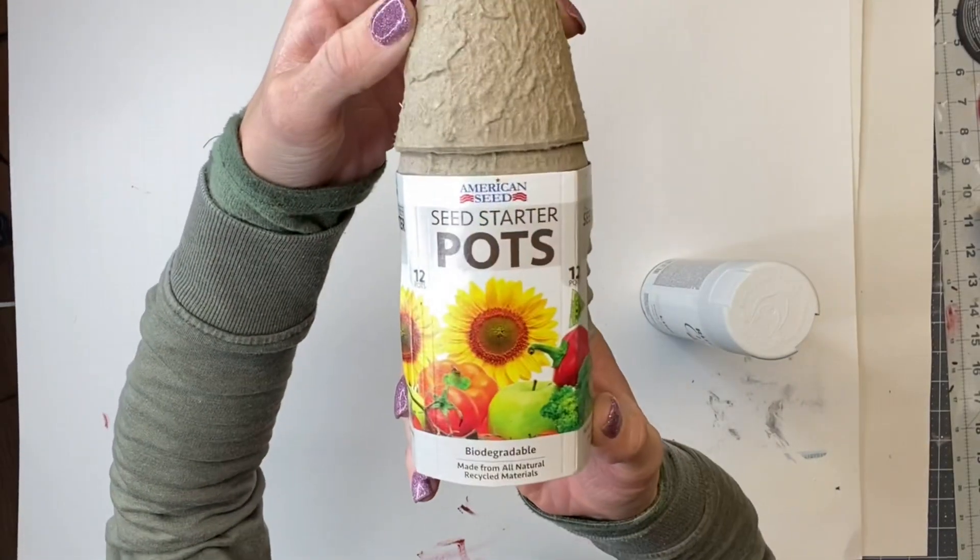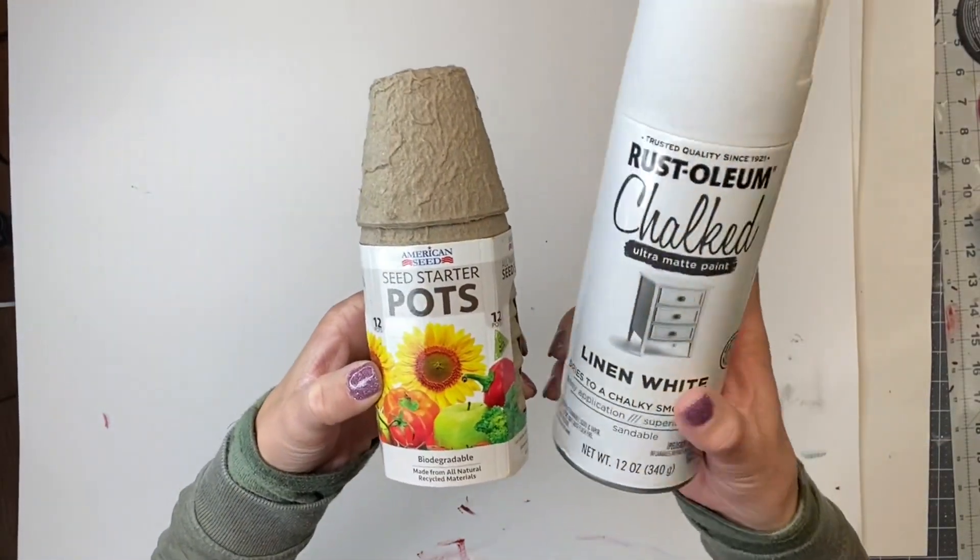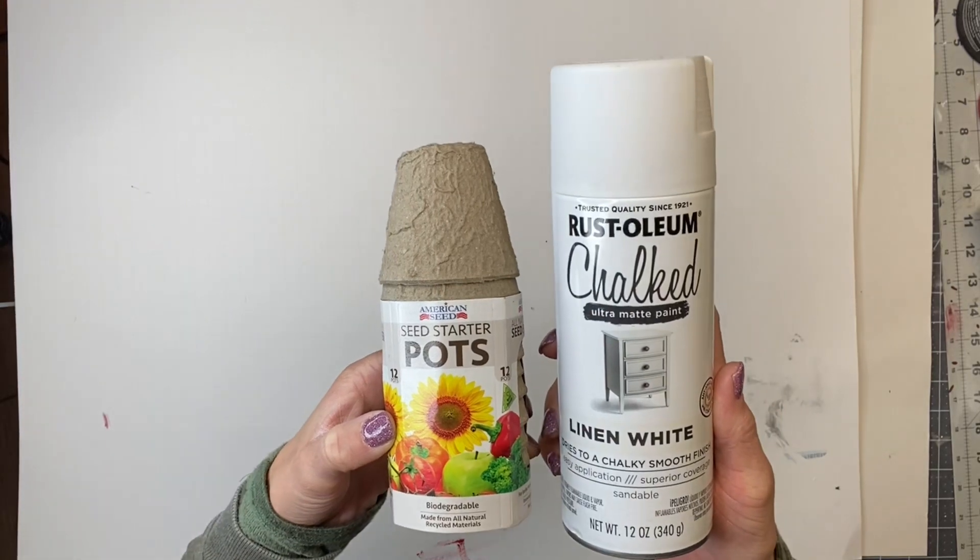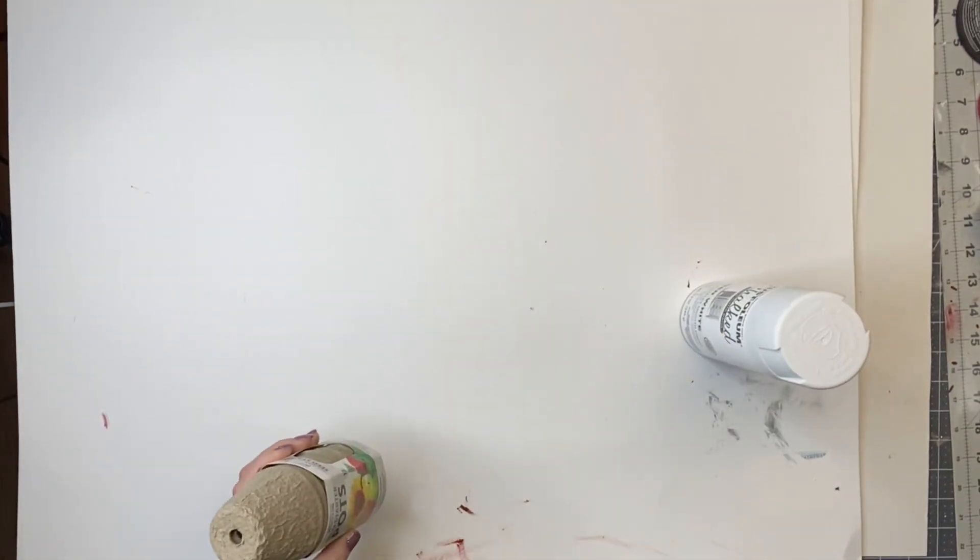I grabbed a pack of these seed starter pots from my Dollar Tree and my Rust-Oleum Chalked Linen White spray paint, and I spray painted five of these pots.